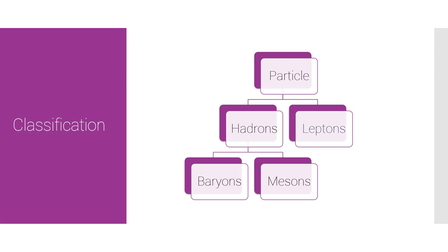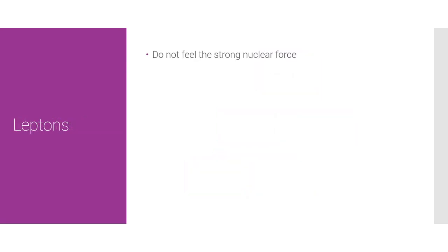Let's move on to leptons. Leptons do not feel the strong nuclear force. Leptons and hadrons both feel the weak force — in fact, everything in existence feels the weak force — but hadrons are the only things that feel the strong nuclear force. Leptons are not made of quarks; they are fundamental particles, and you cannot categorize leptons any further than leptons.